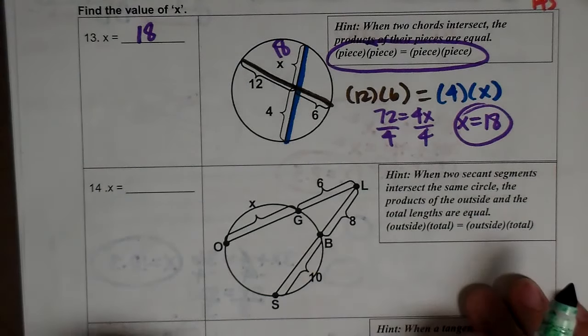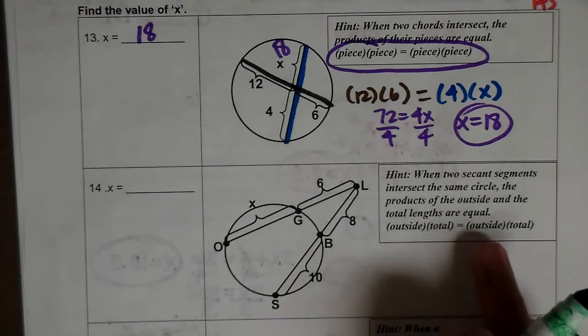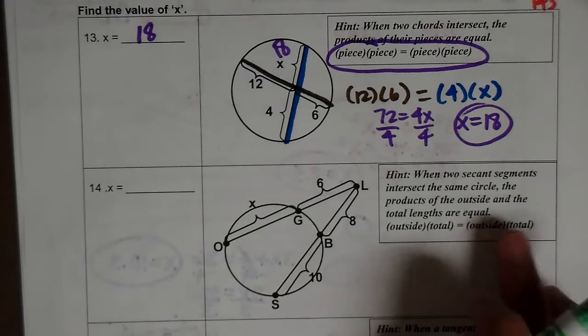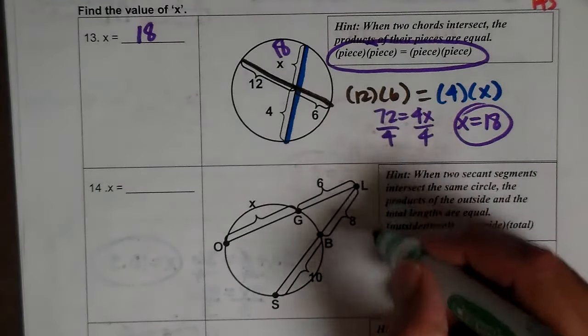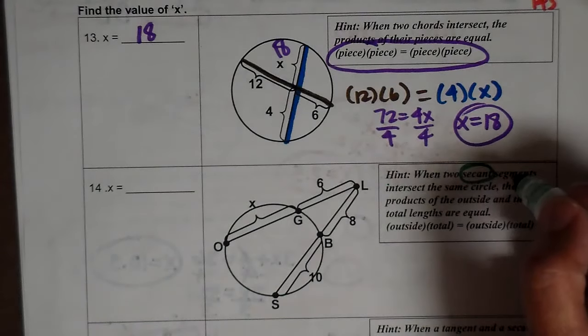When two secant segments intersect the same circle, the products are outside times total equals outside times total, part to whole, part to whole. So these are secants. They touch the circle in two places.